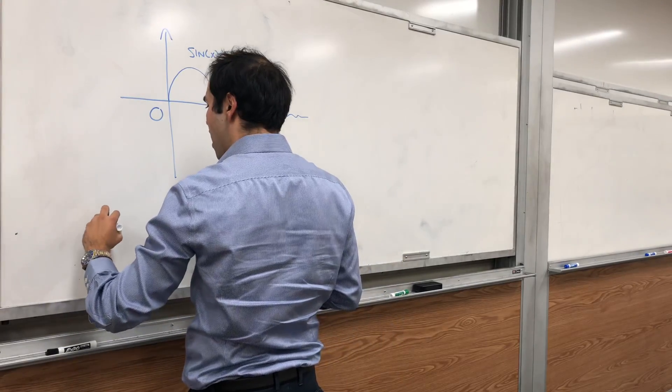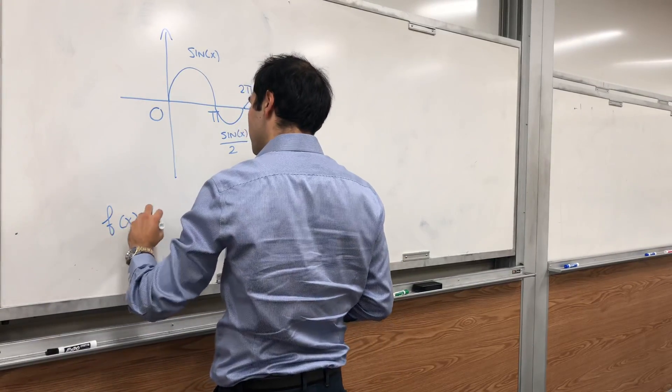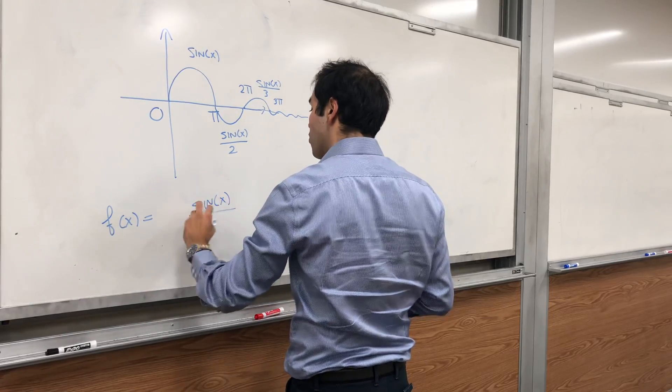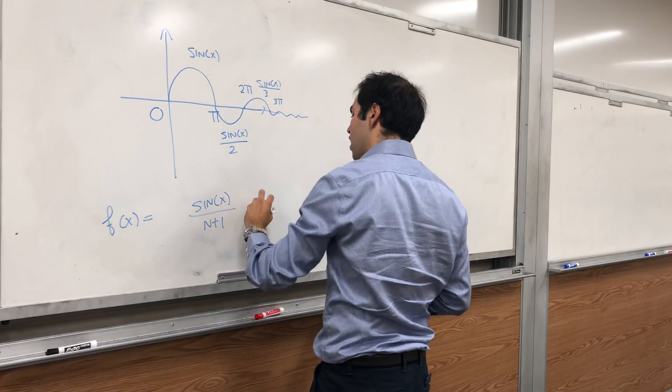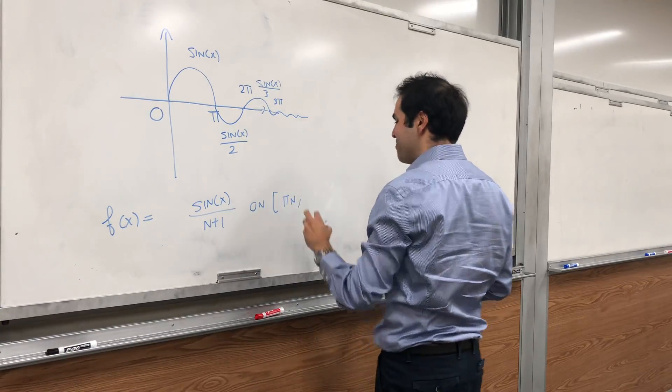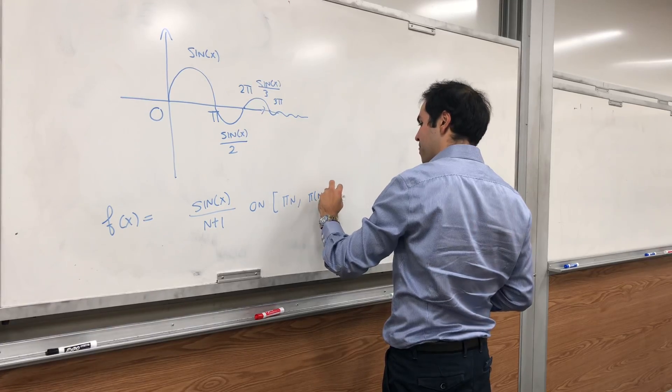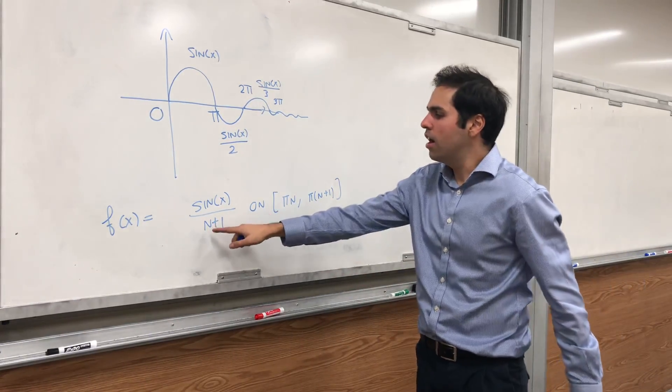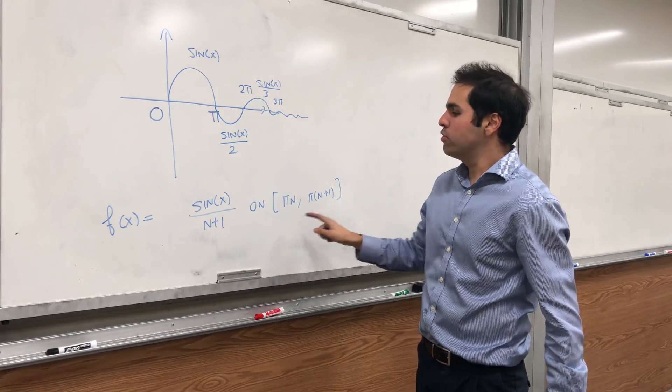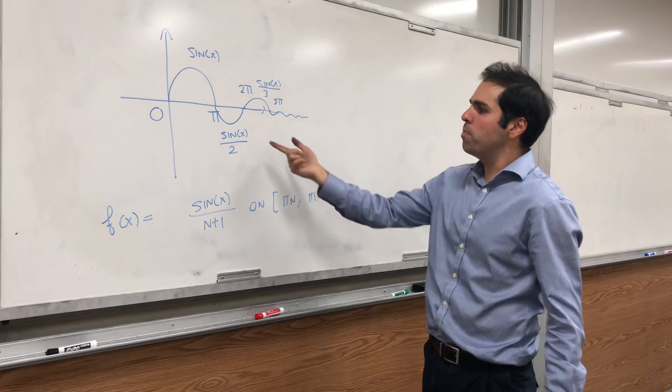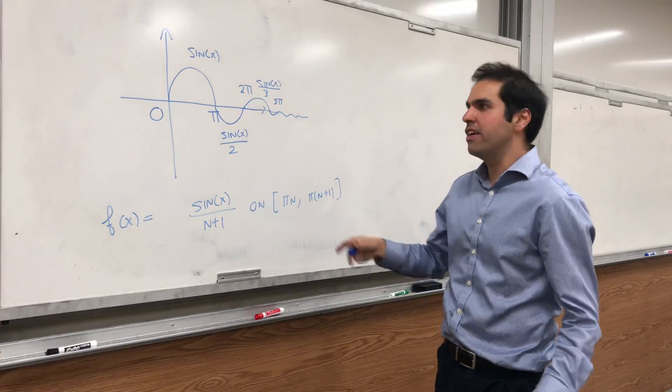So in other words, f of x is just sine of x over n plus 1 on the interval pi n, I should have used pi n but it's okay, and pi n plus 1. This is precisely what this is. From 0 to pi, n is 0, so we have sine of x. From pi to 2 pi, n is 1, so we have sine of x over 2.